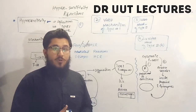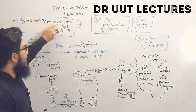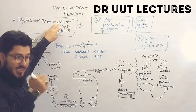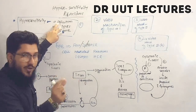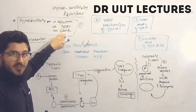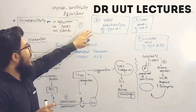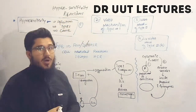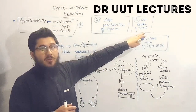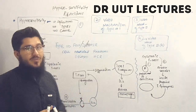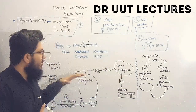This is the fifth video on hypersensitivity reactions. In the first video we discussed the definition and types — type 1, 2, 3, and 4 — and their causes. In the second video we discussed the mechanism of type 1, in the third video type 2, and in the fourth video type 3. Here we will discuss the mechanism of type 4 hypersensitivity reactions.